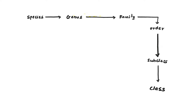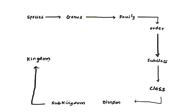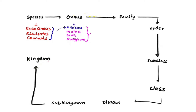Moving from bottom to top: species, genus, family, order, subclass, class, division, sub-kingdom, and kingdom. Species show all characteristics similar. For example, Rosa sinensis, Hibiscus esculentus, and Cannabis are three species — they belong to the same genus Hibiscus. Similarly, genera like Malva, Sida, and Gossypium show some similar characteristics, so they are included in one family: Malvaceae.